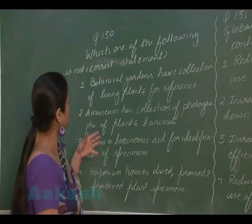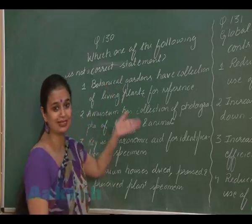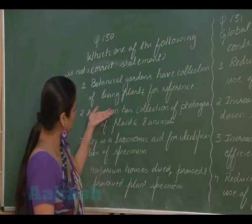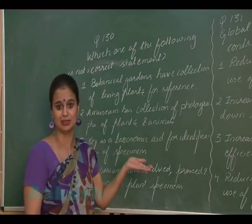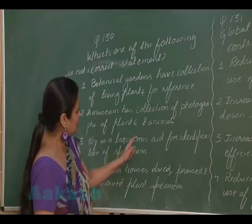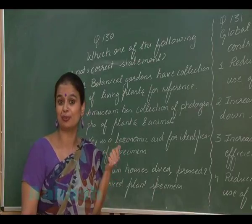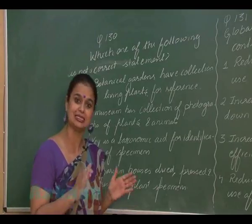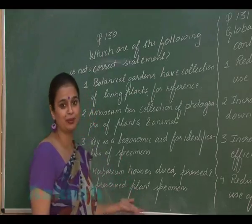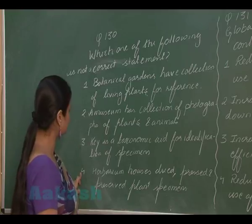Question 130 asks which option is incorrect. Botanical gardens are living herbaria — they have a collection of living plants, so that is correct. Museums have preserved plant and animal specimens, not just photographs, so that description is incorrect. A key is a taxonomic aid used for identification of plants and animals based on similarities and dissimilarities — that is correct. A herbarium has dried, pressed, preserved plant specimens — also correct.